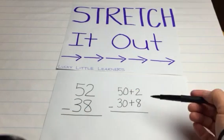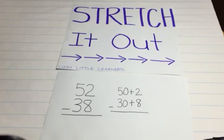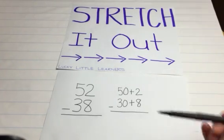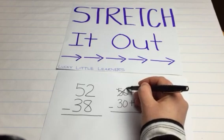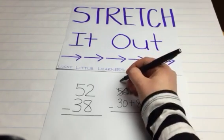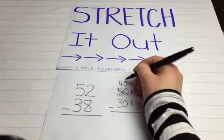Now we're going to say, can we subtract 8 from 2? No. Bigger bottom, we need to borrow. We need to go next door. So we're going to take away 10 from 50, which now becomes 40.